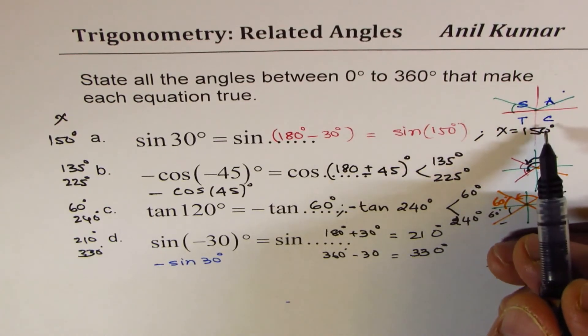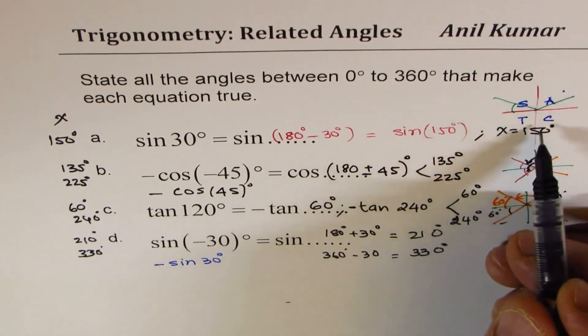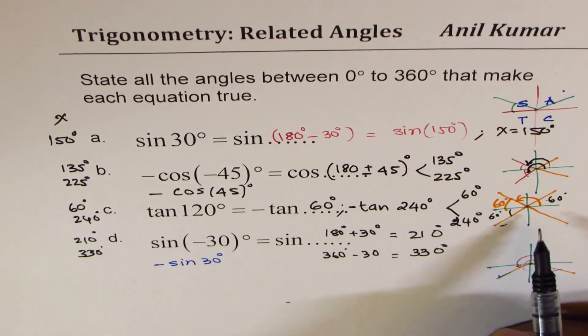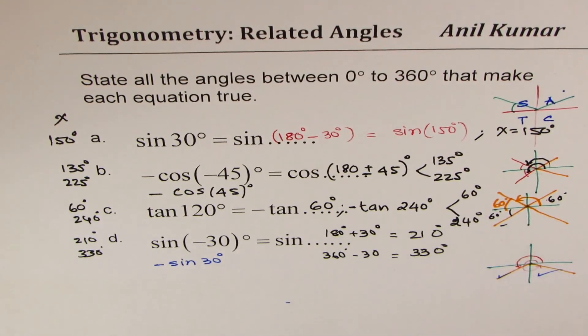So I hope you understand the concept. One is, we need to check which ratio is positive in which quadrant. The second one, we have to relate it with the acute angle. I hope the concept is clear. Let's move on and do some more questions on this. Thank you and all the best.